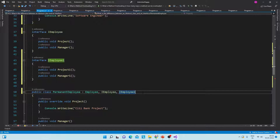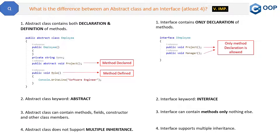So here are all the differences between abstract class and interface. Try to memorize all of them because they are very important and there are higher chances this question will be asked in an interview. If you have any question or query, please post it in the comment section and I will try to reply soon.